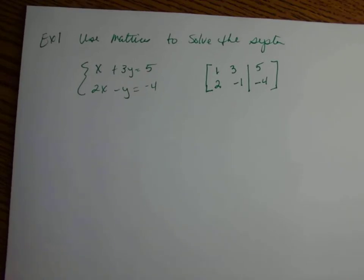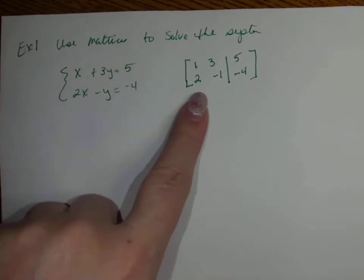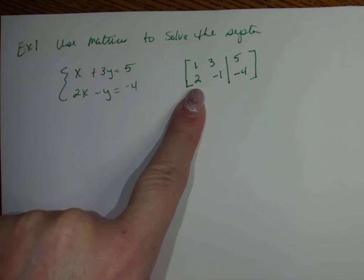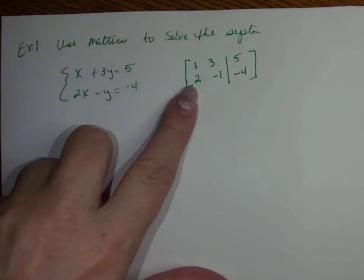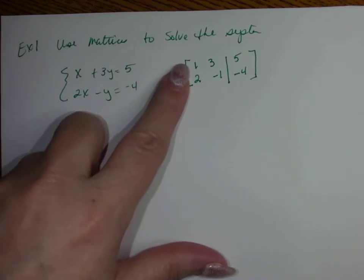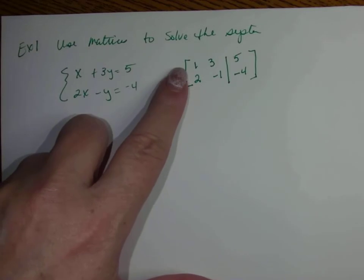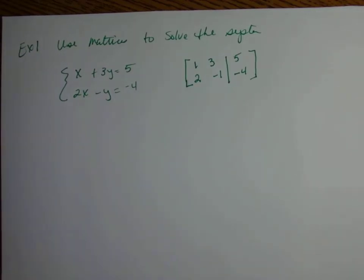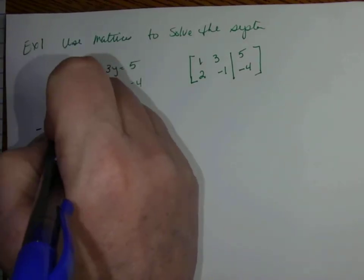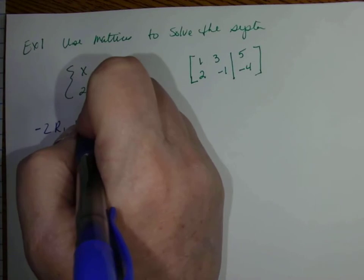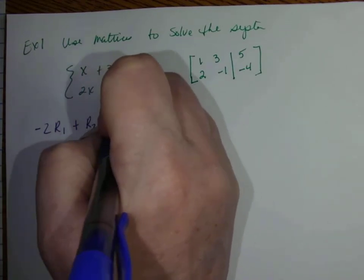To get 2 to become a 0, if I subtract 2 I get 0 — so 2 minus 2 gives me 0. So how can I get negative 2? If I multiply row 1 by negative 2 and then add it to row 2, I get negative 2 plus 2, which gives me 0. So we're going to do negative 2 times row 1, then add row 2, to get our new row 2.